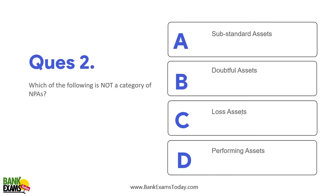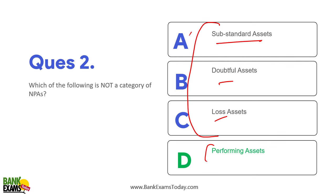Question two: Which of the following is not a category of NPA? There are doubtful assets, loss assets, substandard assets, and standard assets. For NPA, there are three categories — and the standard (performing) asset is not an NPA.